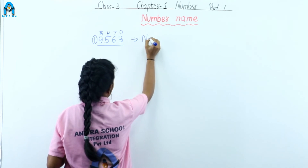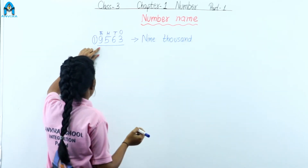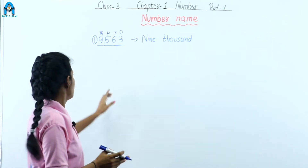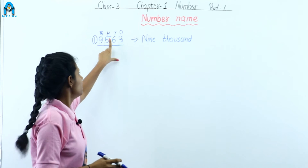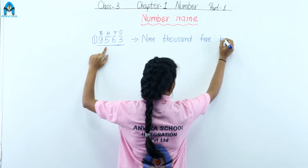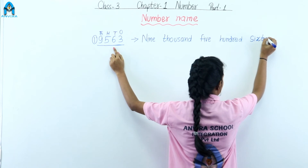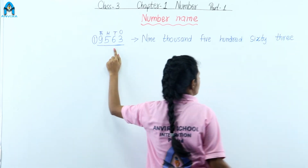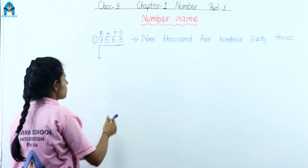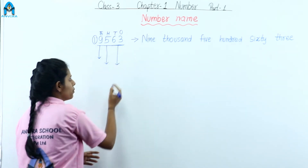Nine thousand. After nine thousand, we read the remaining three-digit number. We know how to read a three-digit number. So this is five hundred sixty-three. To read a four-digit number: first we read the thousands place, then the hundreds place, then tens and ones come together.